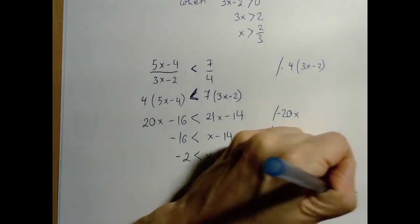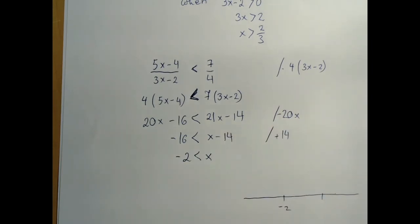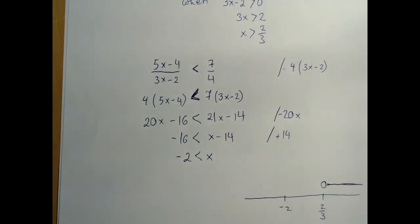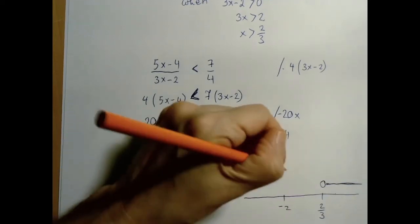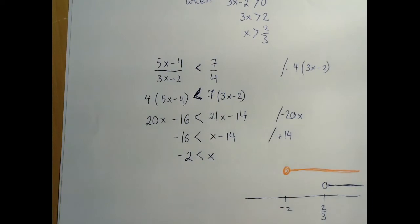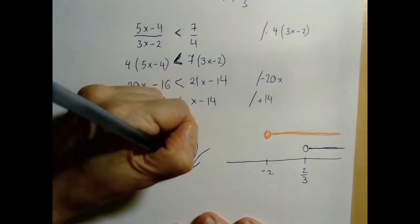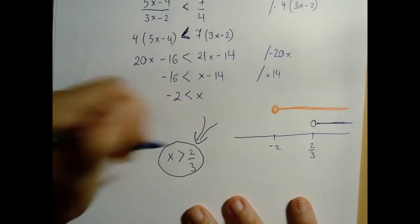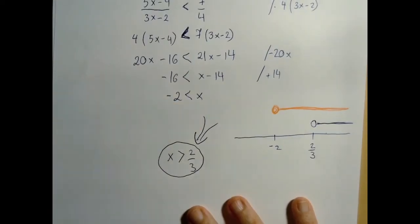So we are looking among the numbers that are greater than 2 thirds, which are all the numbers to the right of 2 thirds. And among those, we found that all of those that are greater than negative 2 will work. So that means that in this case, when the denominator is positive, we have found x is greater than 2 thirds.